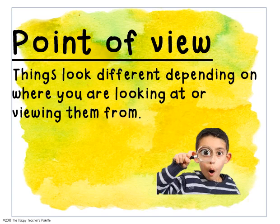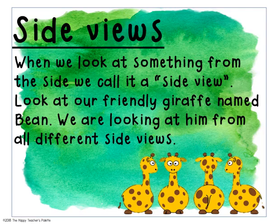If you look to the side and you look to your right hand side, whatever is on your right hand side, that's your point of view from it. So anything you look at from where you are looking at or viewing them, that is called your point of view. The first view we're going to learn about is our side view. When we look at something from a side, we obviously call it a side view.